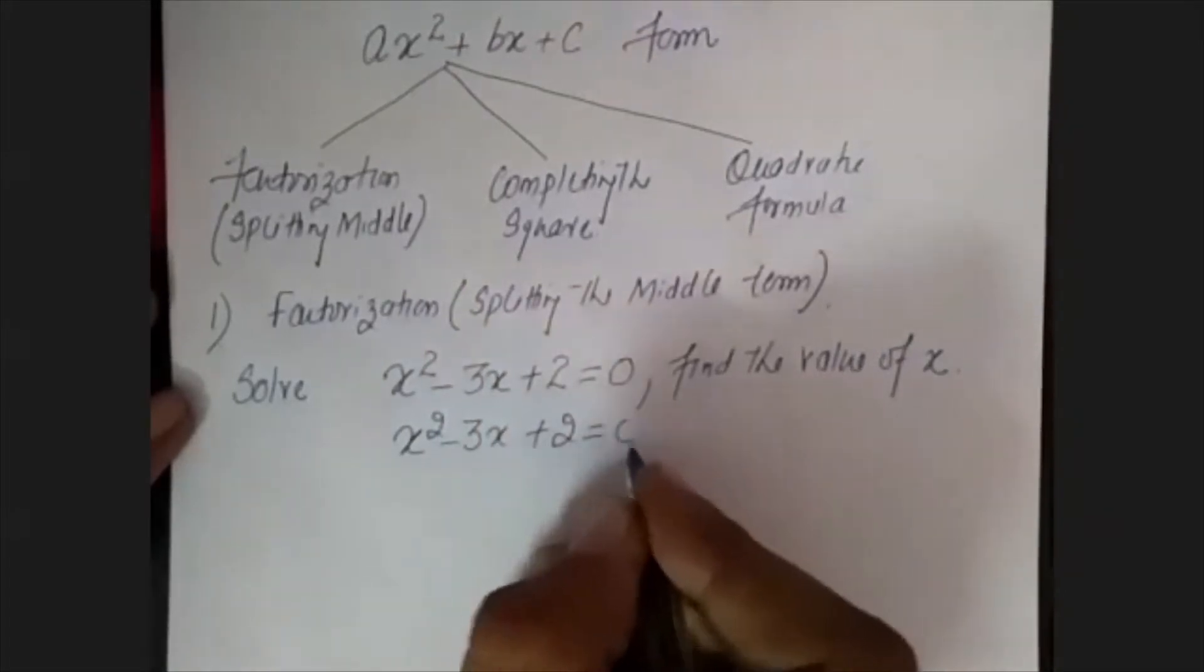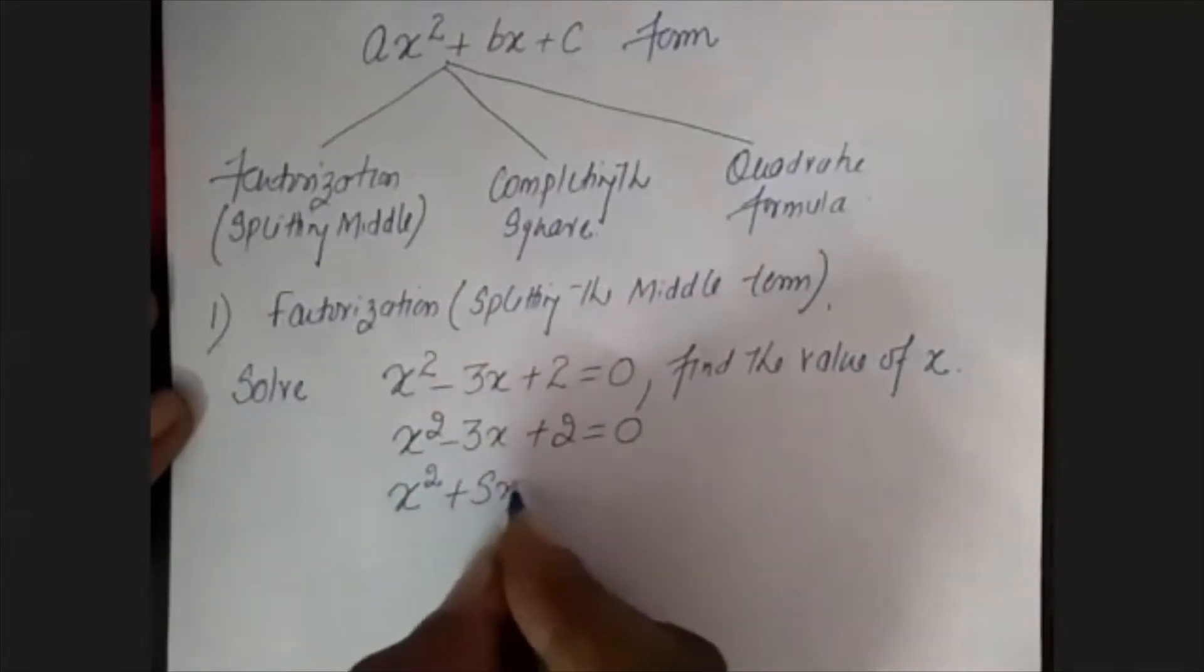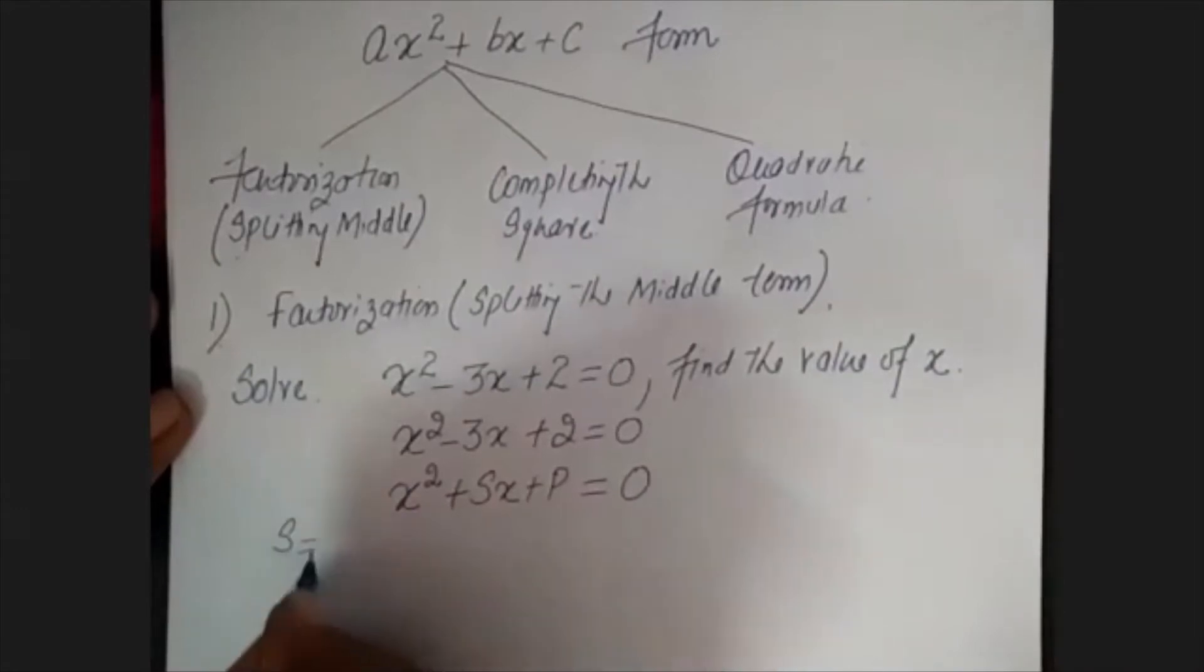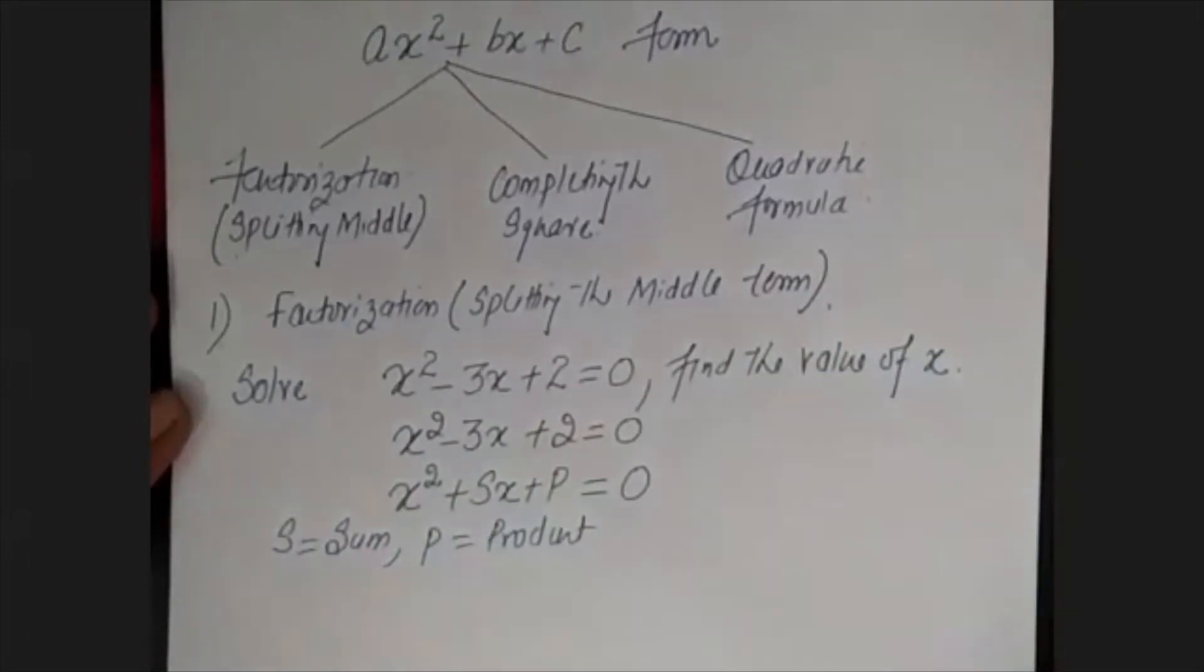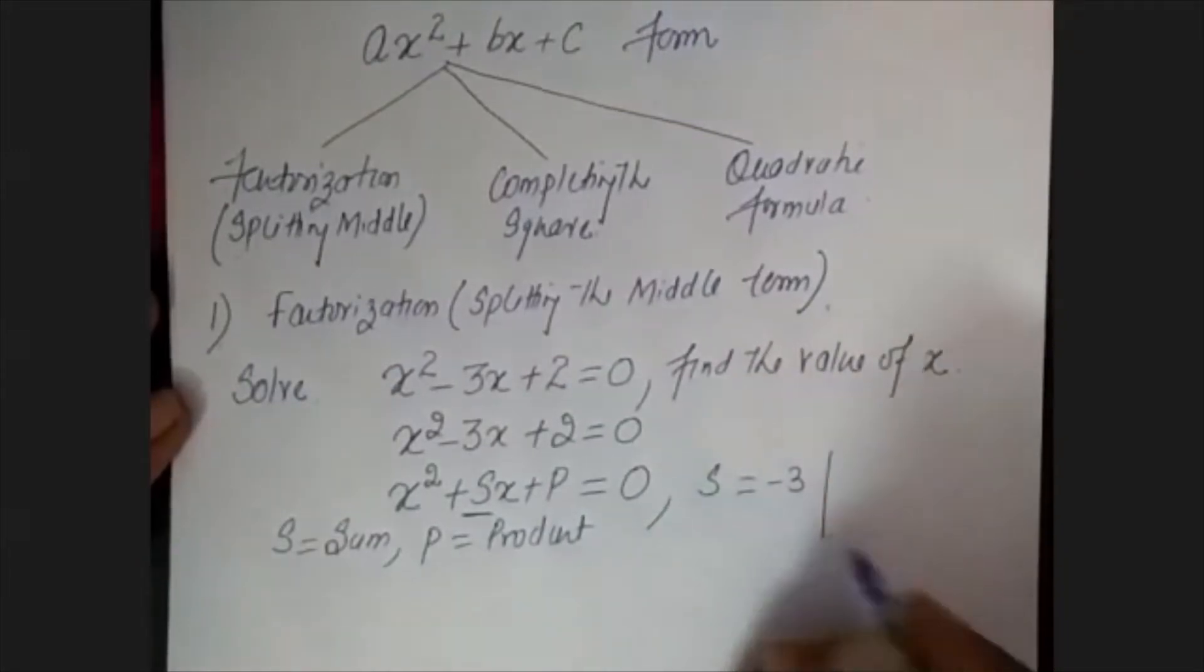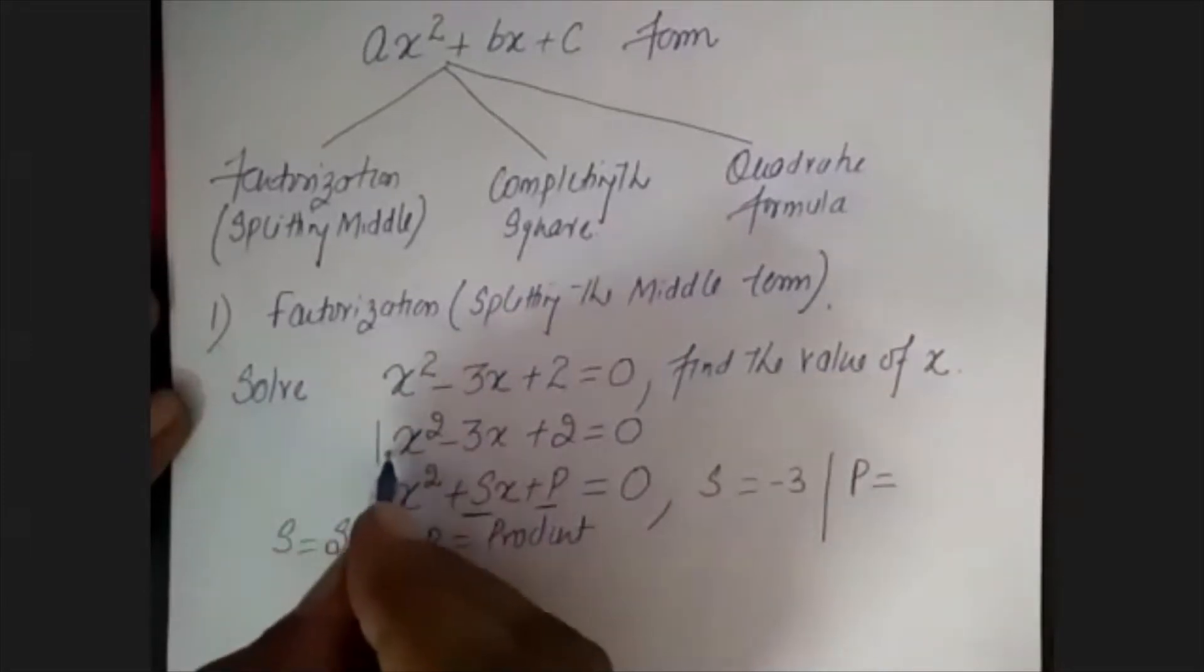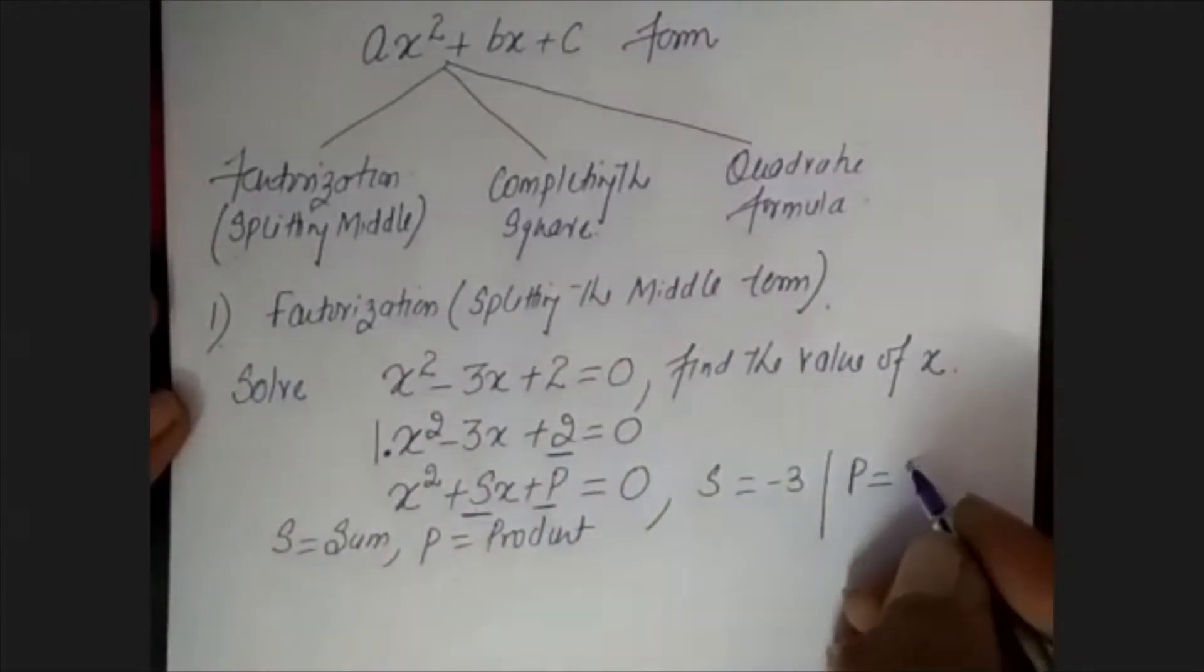The first rule is to compare it to ax² + bx + c form. We will compare. What is the sum? Sum means b. What is p for product? We multiply the coefficient of x² and the constant term to get the product.